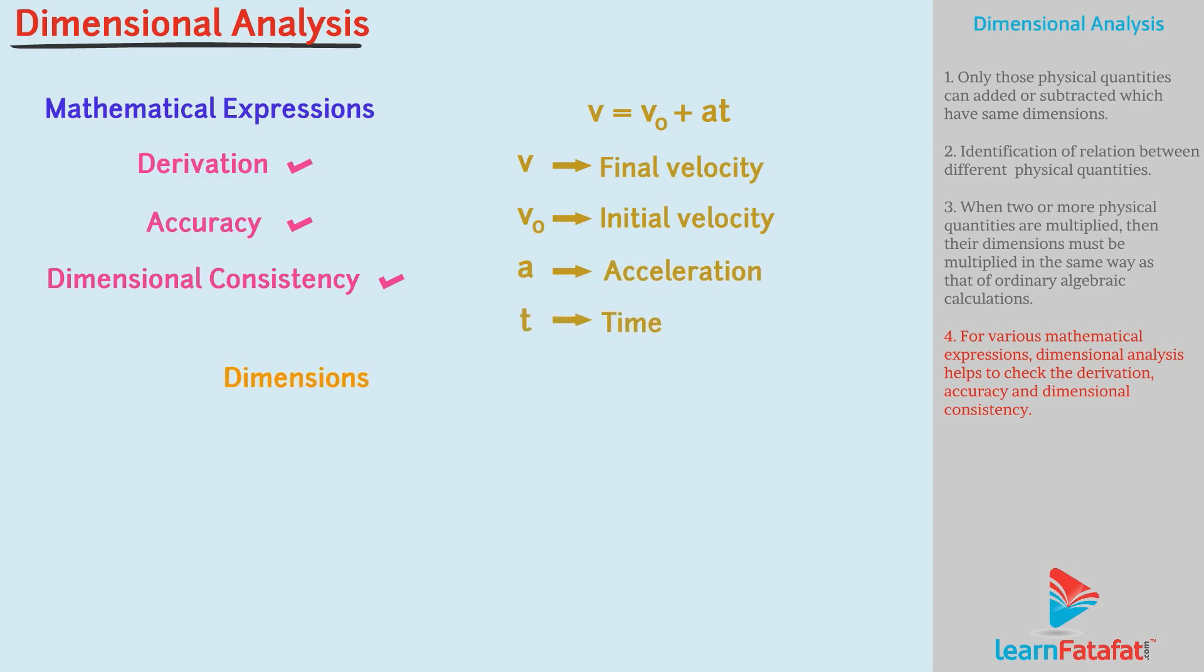So, dimension of final velocity V equals to M to the power 0 L T to the power minus 1. Call this as equation number 1. Dimension of initial velocity V0 will be given by M to the power 0 L T to the power minus 1. Call this as equation number 2.